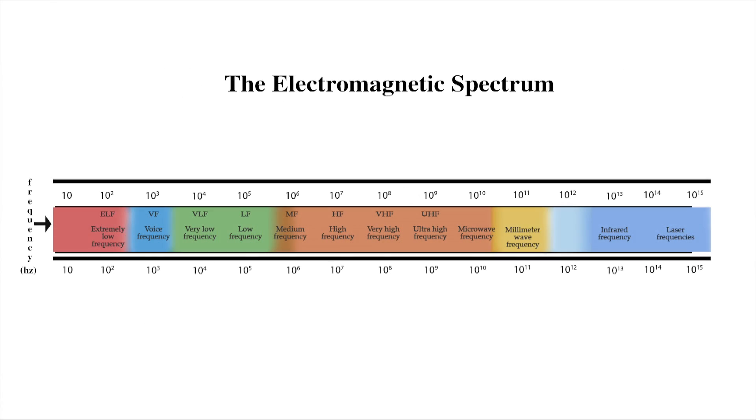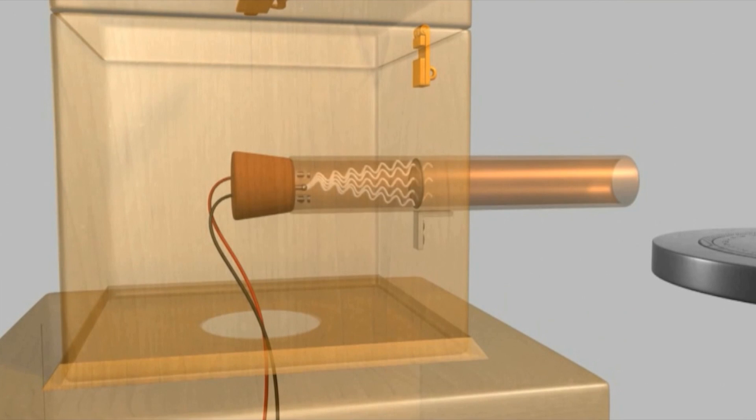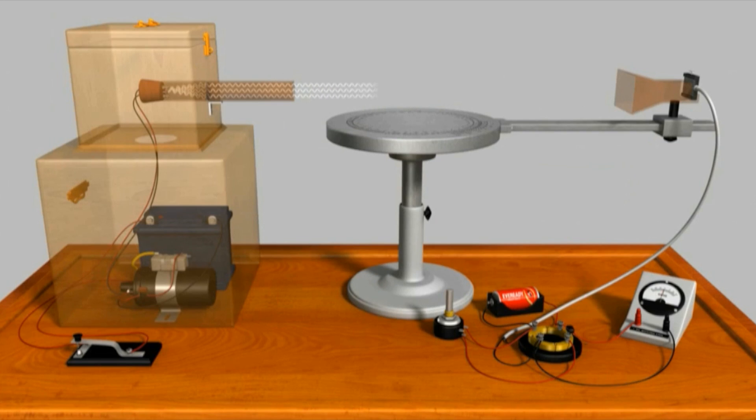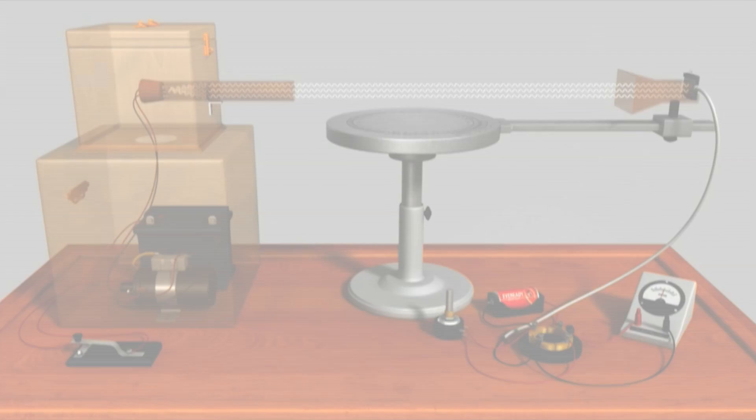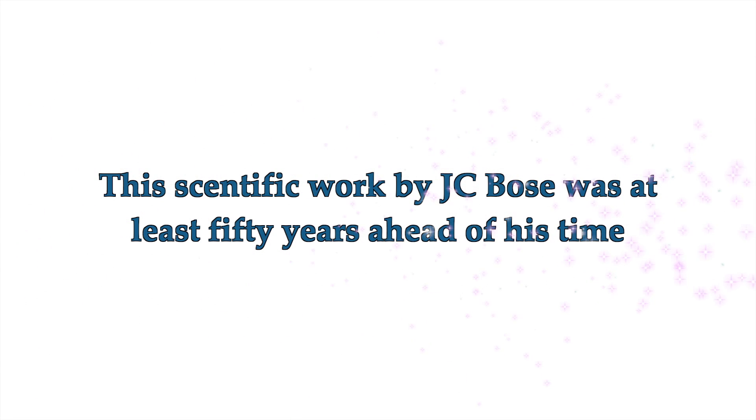Frequency spectrum extends from voice frequency signals to visible light and beyond. Millimeter waves are a small part of the frequency spectrum. In 1895 Bose demonstrated the generation, transmission and reception of electromagnetic waves at millimeter wave frequencies over 23 meters distance. This scientific work by JC Bose was at least 50 years ahead of his time.